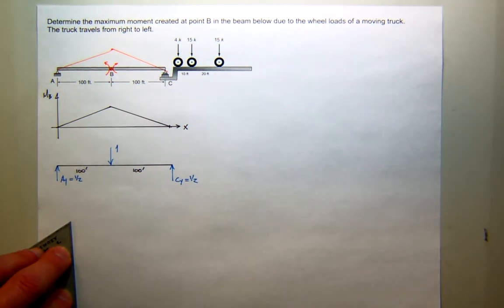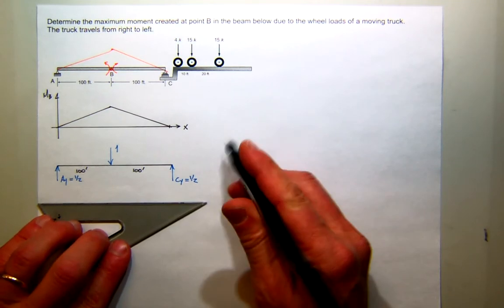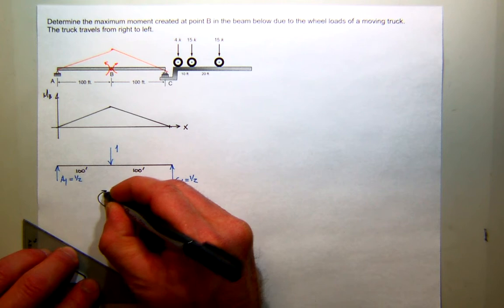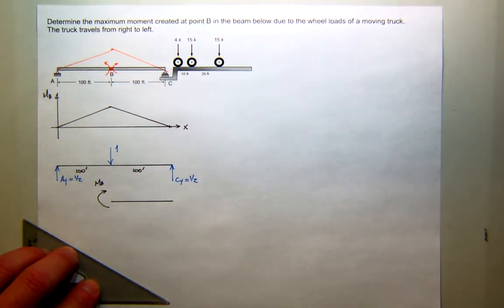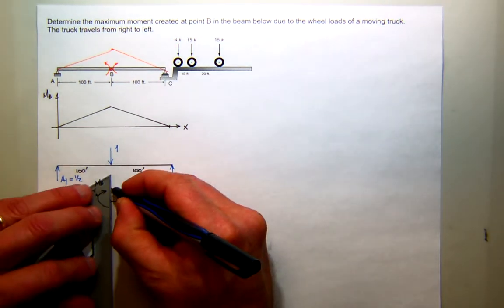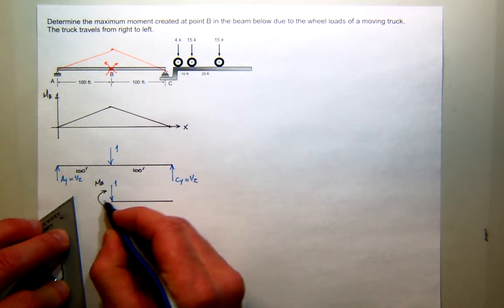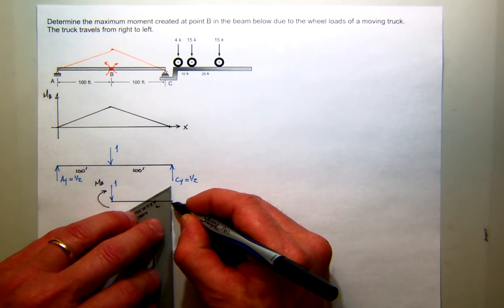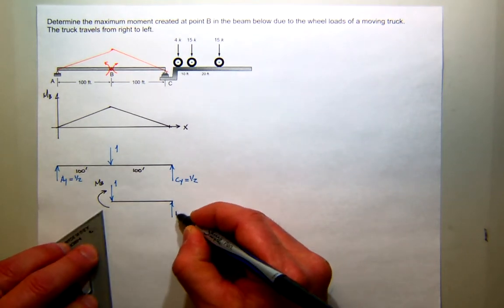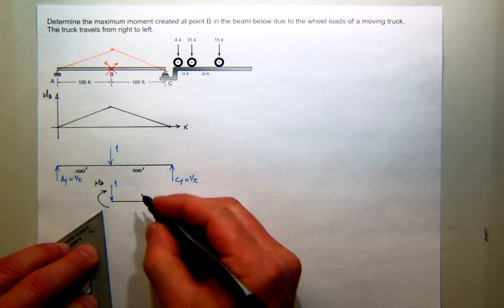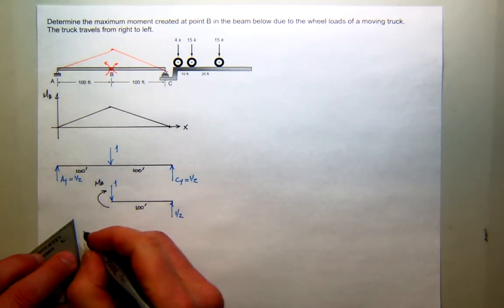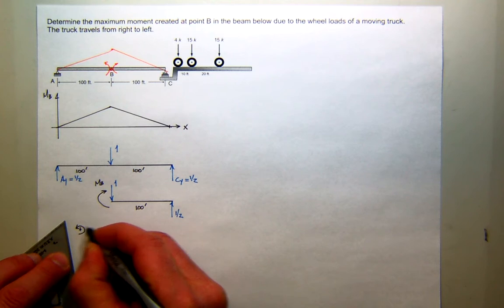Now, if I cut that structure so that I can see the moment at B, and it doesn't really matter whether you cut it just to the right or just to the left, you're left with no real moment arm for one, so that's not a concern. And all I have is the reaction, which we know is one half. What is the moment at B?